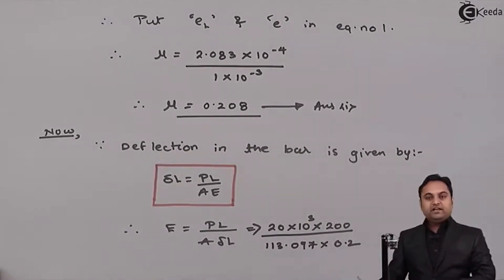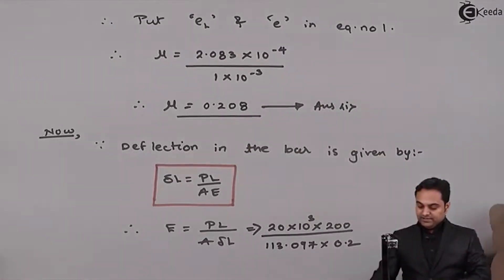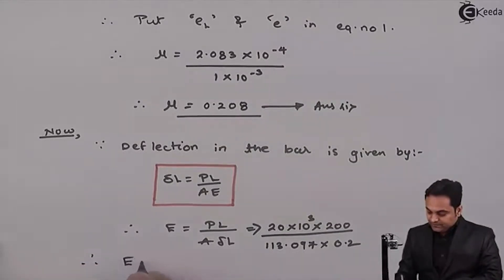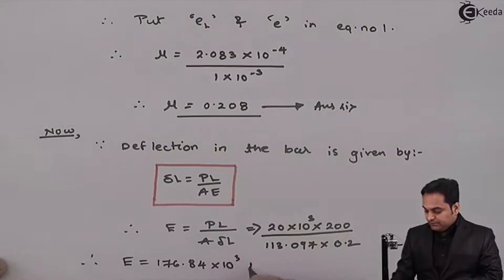So from this if I calculate I'll get the answer as therefore capital E comes out to be 176.84 into 10 raised to 3 Newton per mm square. This is the second answer.